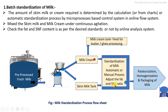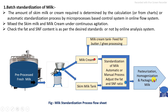There should be provision to automatically detect the fat and SNF percentage by providing sensor devices in the standardization process, to mix skim milk with the required quantity of milk cream and obtain the final standardized milk. This product is then pasteurized and homogenized, and afterwards properly packed into milk pouches.